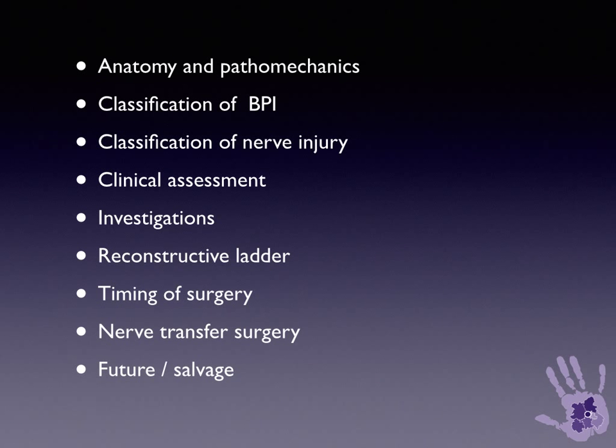There are a number of topics to be covered in this series: notably the first lecture, which is about anatomy, pathomechanics of injury, and classification of brachial plexus injury. There's a separate talk on the classification of nerve injuries, another on the clinical assessment of nerve injuries, and one on investigations. Then there are a series of talks on the reconstructive ladder in peripheral nerve surgery, timing of intervention, and nerve reconstructive strategies, including nerve transfer surgery.